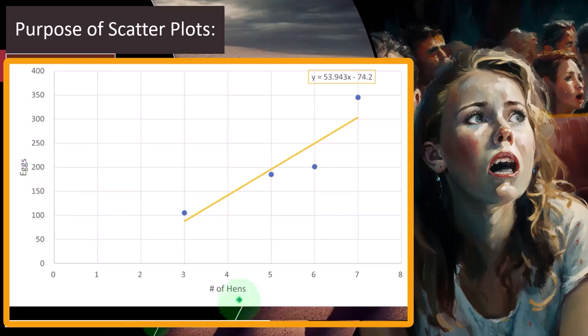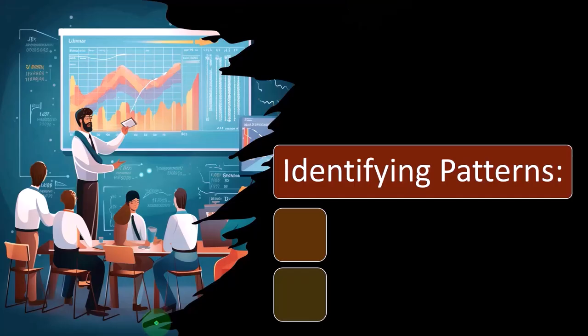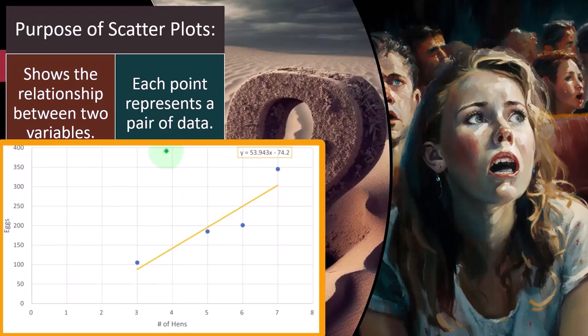Intuitively, if I was a farmer, I would have a pretty decent sense that hens are causing the eggs. More hens means there's a relationship between the two. Each point represents a pair of data. But if I plot them, then I get a better sense of exactly what that relationship is.